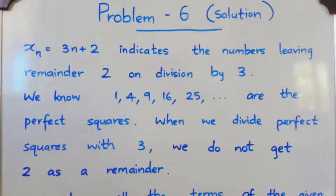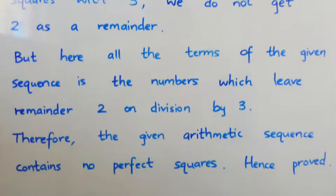From this we understand that when we divide perfect squares by 3, we do not get 2 as a remainder.